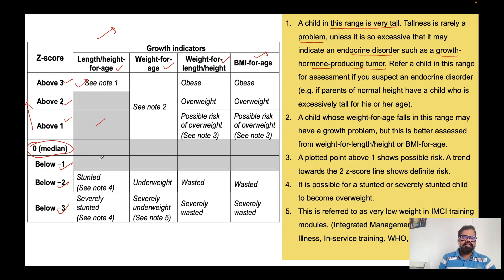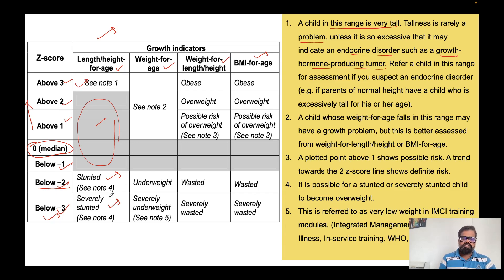Above two, above one, zero, and minus one are not a problem for height-for-age. But if height-for-age falls below minus two z-score, the child is stunted. If it falls below minus three, it is severely stunted. Note that a child can be stunted or severely stunted and at the same time also be overweight.